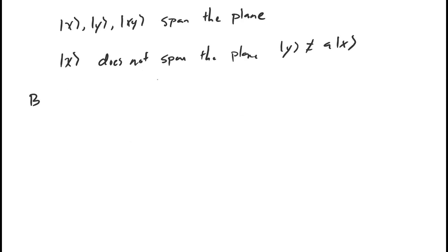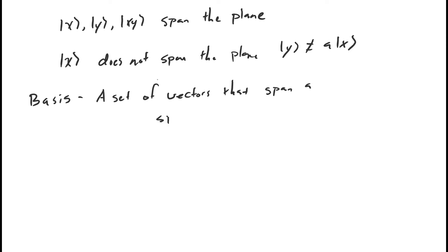The second term I wanted to talk about is basis. This is an easy concept if you understood the concept of span. A basis is a set of vectors that spans a space and are all linearly independent. So this just removes that redundancy I was mentioning earlier. A basis has to be linearly independent — it's, in a sense, a minimal set of vectors that span a space.